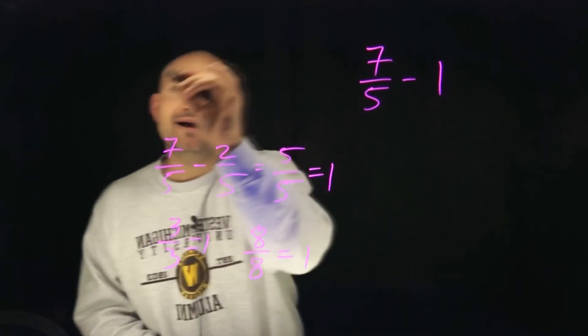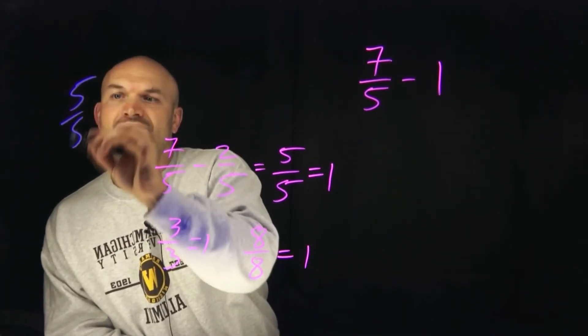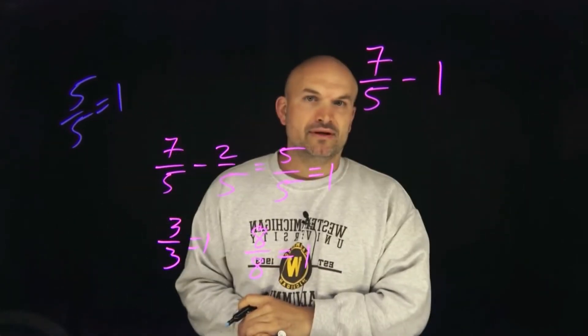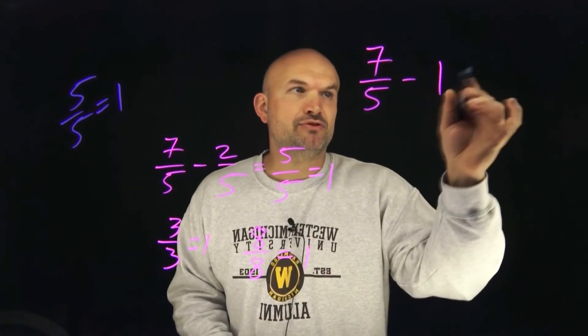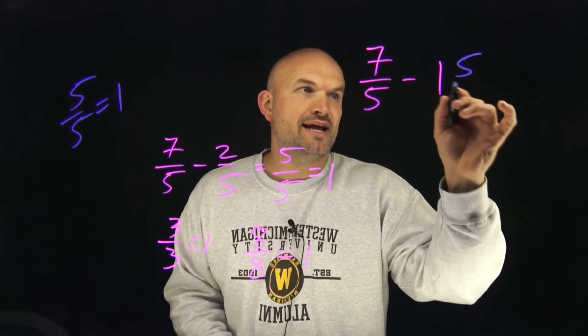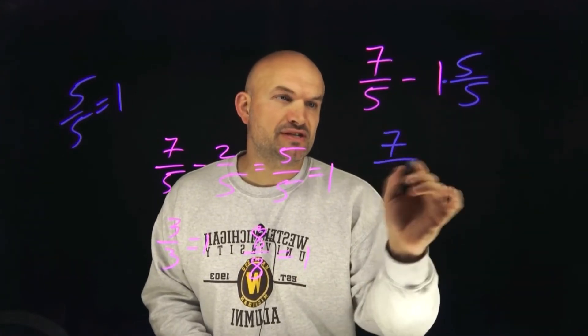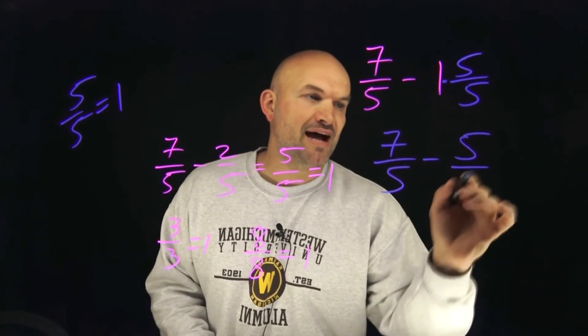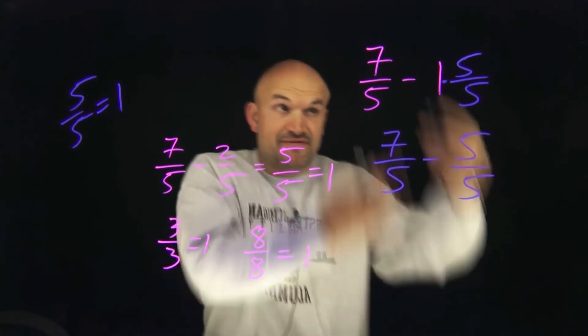So all I'm simply going to do is say, all right, I already know that five over five is equal to one. So what I'm going to do here is I'm just going to change this and say it's five over five. Therefore, now I have the expression seven-fifths minus five-fifths. Because isn't five-fifths the same thing as one? It is.